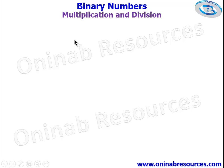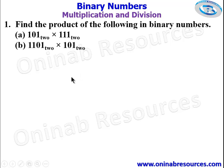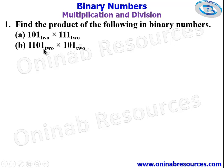So we start with the first problem. Problem 1: find the product of the following in binary numbers. We have 101 base 2 times 111 base 2, and for part B we have 1101 base 2 times 101 base 2.